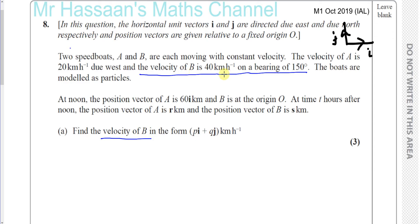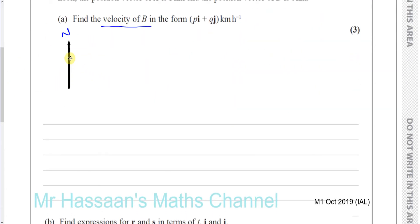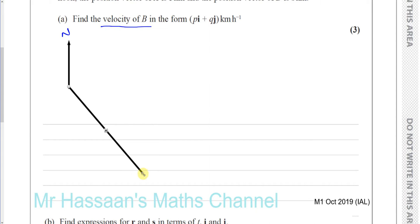Let's make a sketch. A bearing is always measured from the north line, and always measured in the clockwise direction. So we need to go 150 degrees clockwise from the north line. Clockwise: 90 degrees is east, 180 degrees is south. So 150 degrees is something between east and south — about 60 degrees past east. That's 150 degrees, and the magnitude is 40 kilometers per hour.